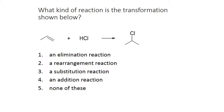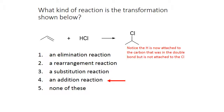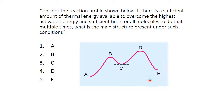What kind of reaction is shown in the transformation below? Looking at this reaction, there is a chlorine added, two hydrogens on one carbon becoming three, and we lost the double bond while gaining a bond to chlorine and a hydrogen. It is not a substitution, not a rearrangement, and nothing is being eliminated. The only possibility here is that this is an addition reaction.